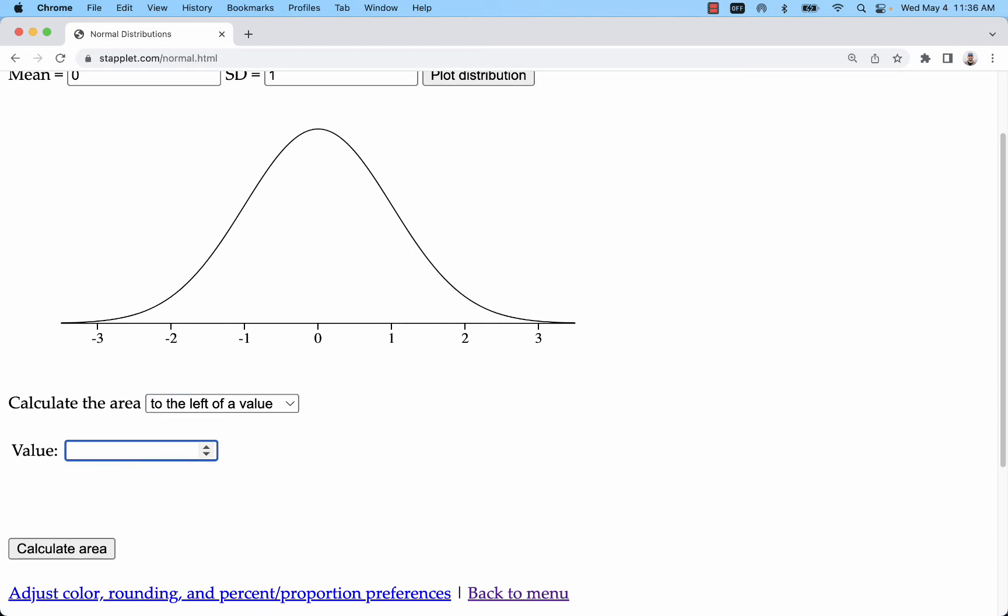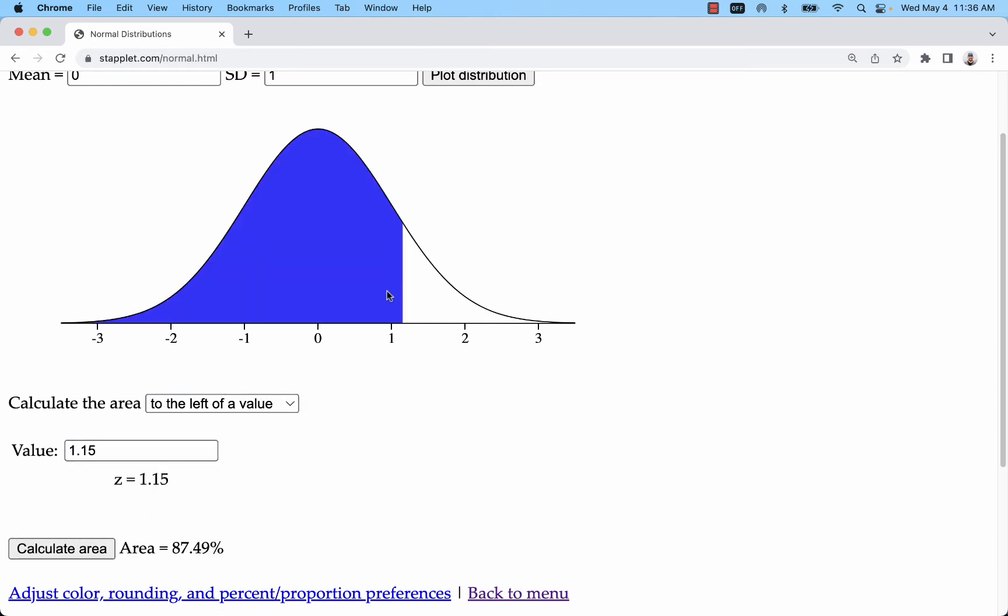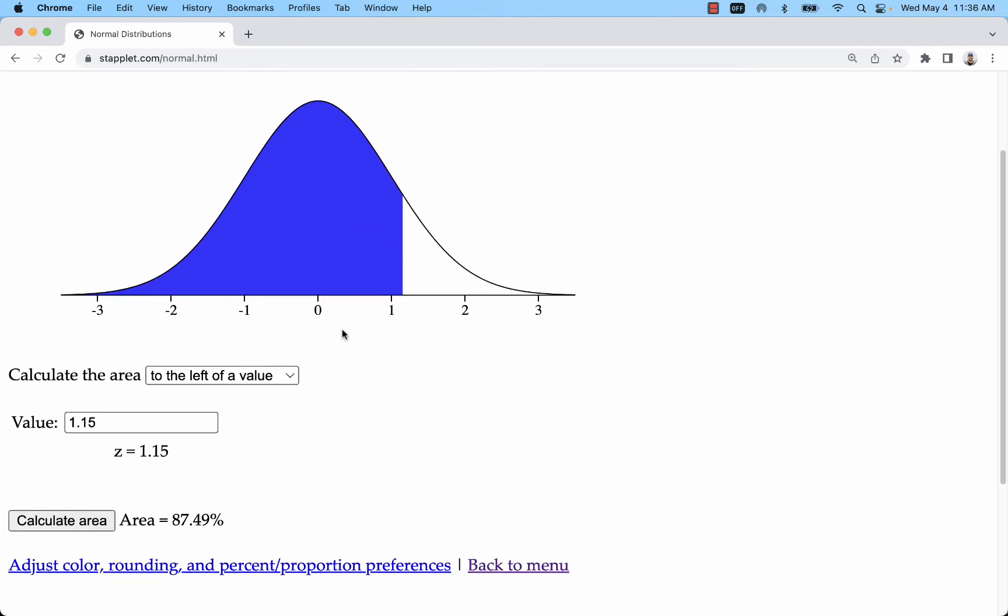You can also go to the left of a value. Here I'm going to pick something with a decimal, like 1.15 probability of being to the left of that. You can see that plotted. We're looking at that shaded region. That's 87.49% of the area under the curve, or of the outcomes that we would see.